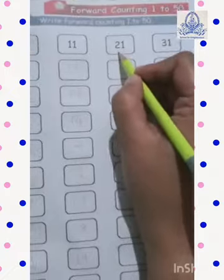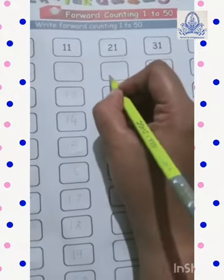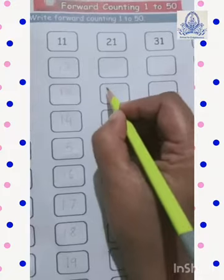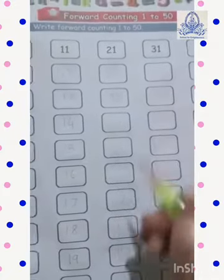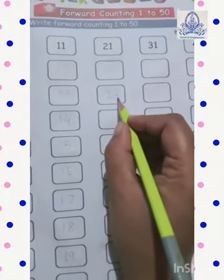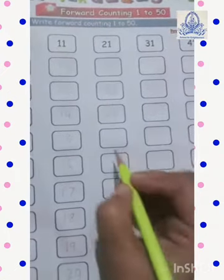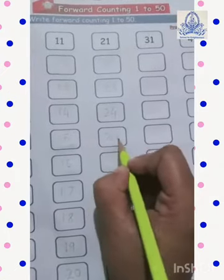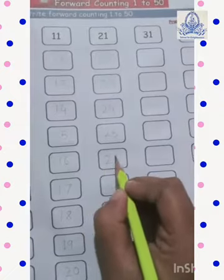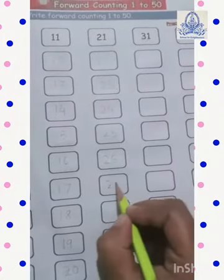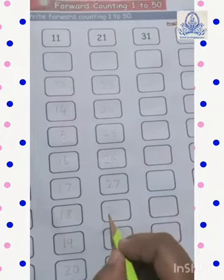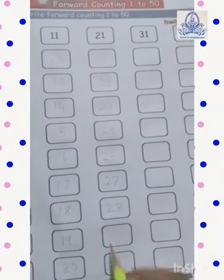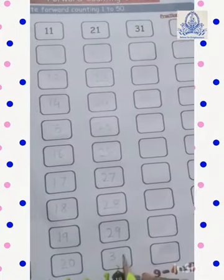Very good. 20 after? 21. 21 after? 22. 22 after? 23. 24. 25. 26. 27. 28. 29 after? 30.